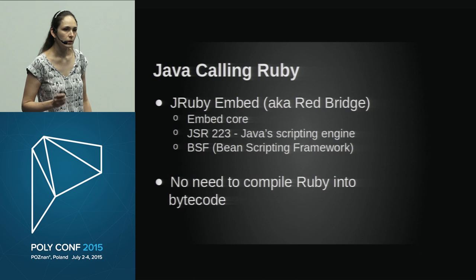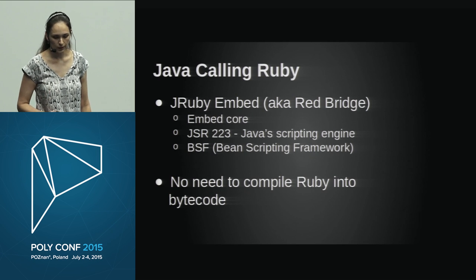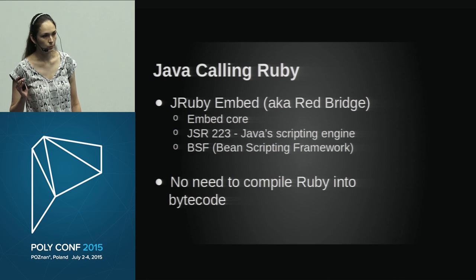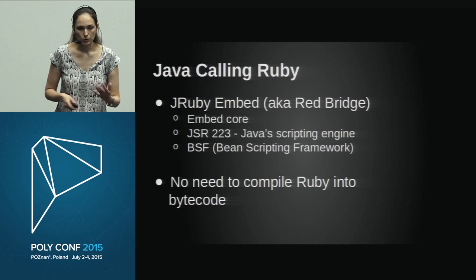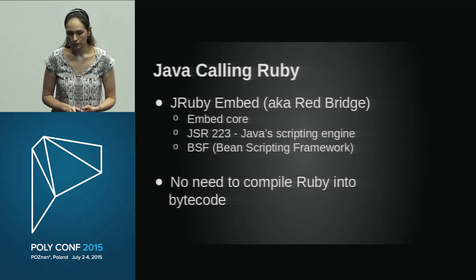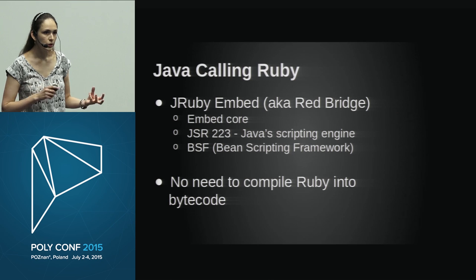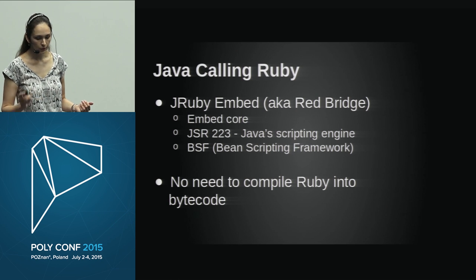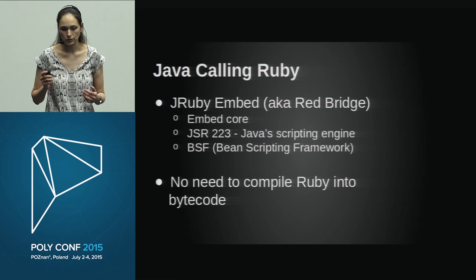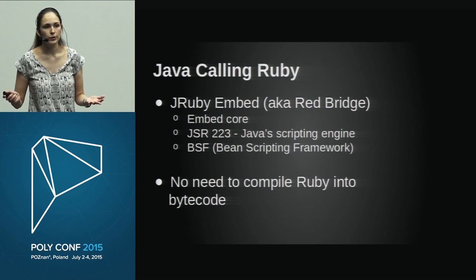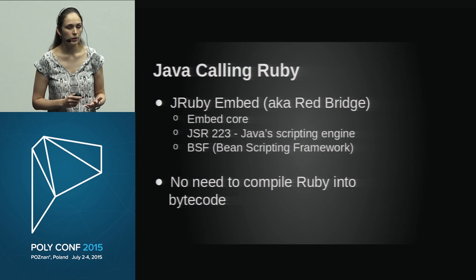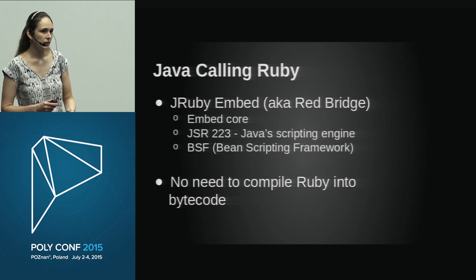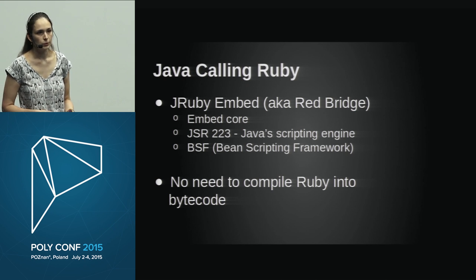There are different methods to work with this, called JRuby Embed — previously known as Red Bridge. The first is Embed Core, which comes bundled with JRuby by default. The second is an implementation of JRuby for JSR 223, the scripting engine standard. The JDK itself comes bundled with JSR 223 support for JavaScript via Rhino, and JRuby adds yet another engine for Ruby.